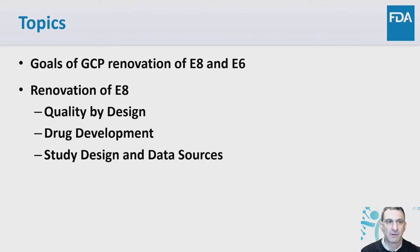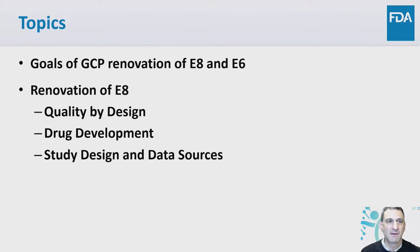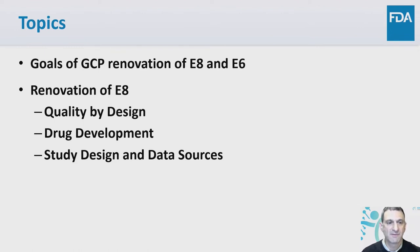Here are the topics I'll go through. First, I'm going to describe the goals of good clinical practice renovation of E8 and E6. I'm going to start with talking about GCP renovation of E8 and E6. Then I'm going to focus on the major changes in E8 from the original E8 to the renovation. That includes quality by design, some changes in drug development, and study design and data sources.